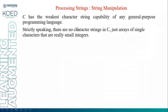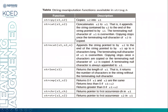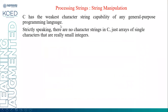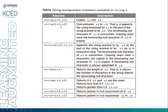Strictly speaking, there are no character strings in C, just an array of single characters that are really small integers — they will have an equivalent integer value. We have a set of functions to manipulate strings, and they are all stored in the header file string.h. String manipulation functions are available in the header file string.h.